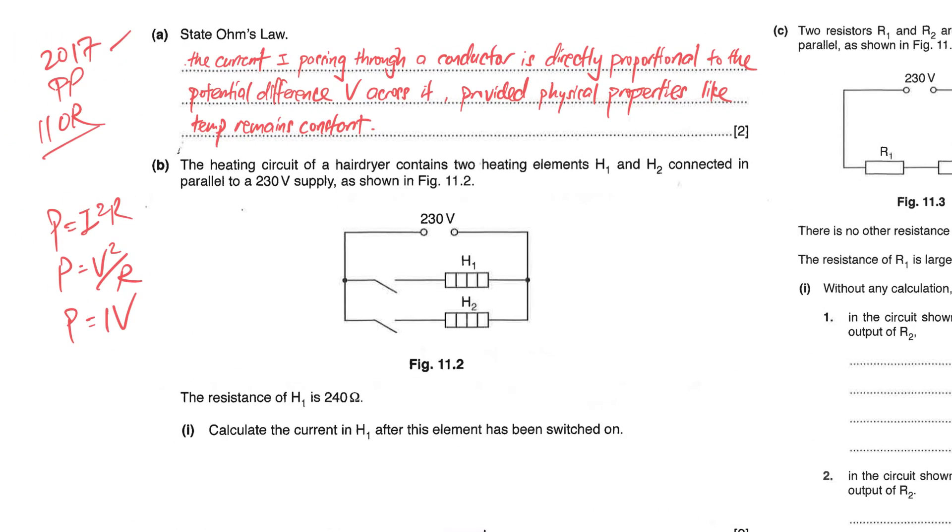Part A is very straightforward. They ask you to basically state Ohm's Law. For Ohm's Law what you need to record is I directly proportional to your V. You write in full: the current passing through a conductor is directly proportional to the potential difference across it provided physical properties like temperature remains constant.